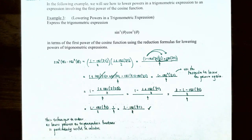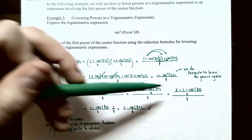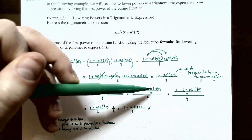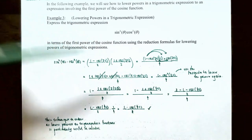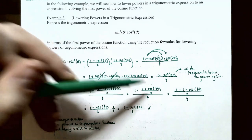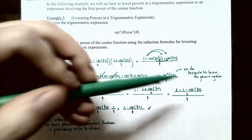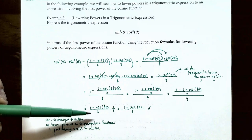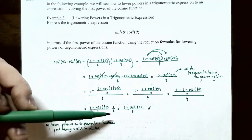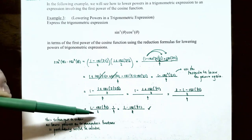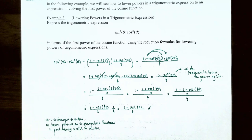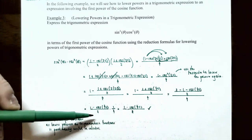To simplify the numerator, we need a common denominator of 2: rewrite 1 as 2/2, giving (2 − 1 − cos(4θ)) / 2 = (1 − cos(4θ)) / 2. Since we're dividing by 4 in the denominator, we multiply by the reciprocal 1/4. So (1 − cos(4θ)) / 2 × 1/4 = (1 − cos(4θ)) / 8. This technique is particularly useful in calculus for rewriting powers of trig functions in terms of cosine to the first power.